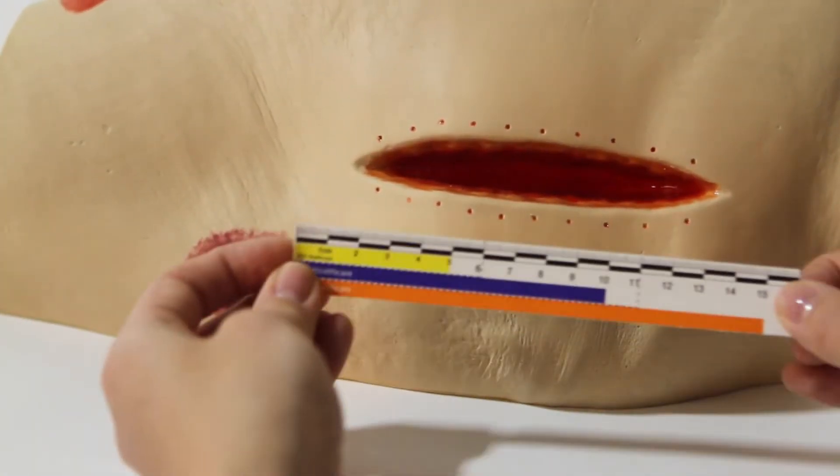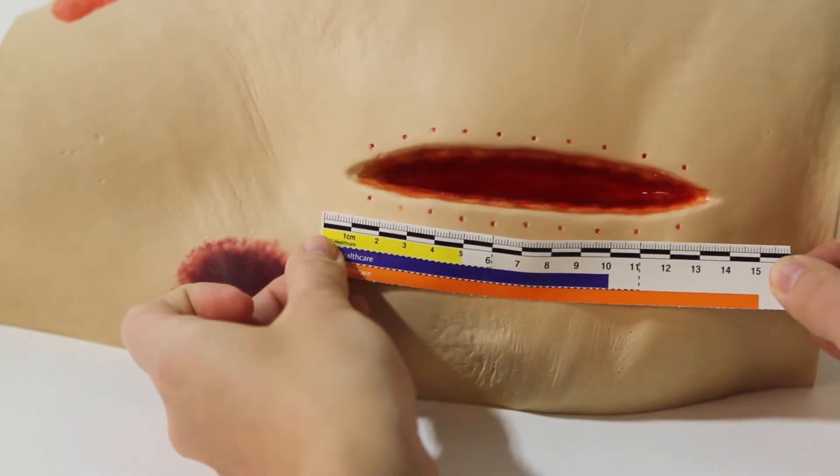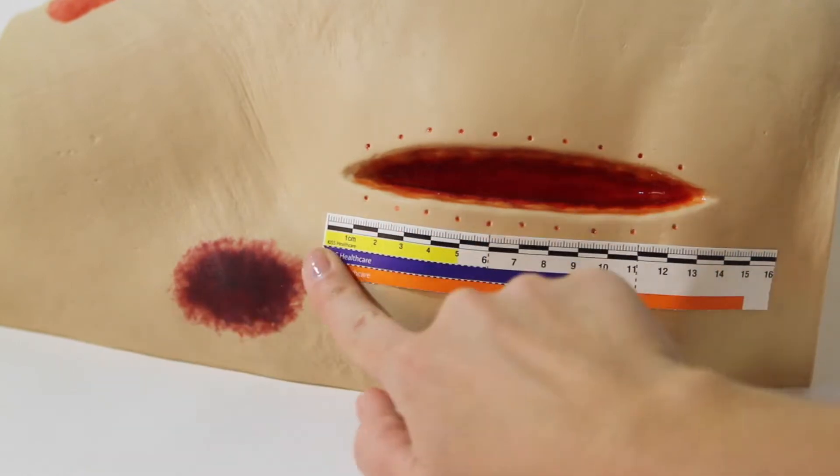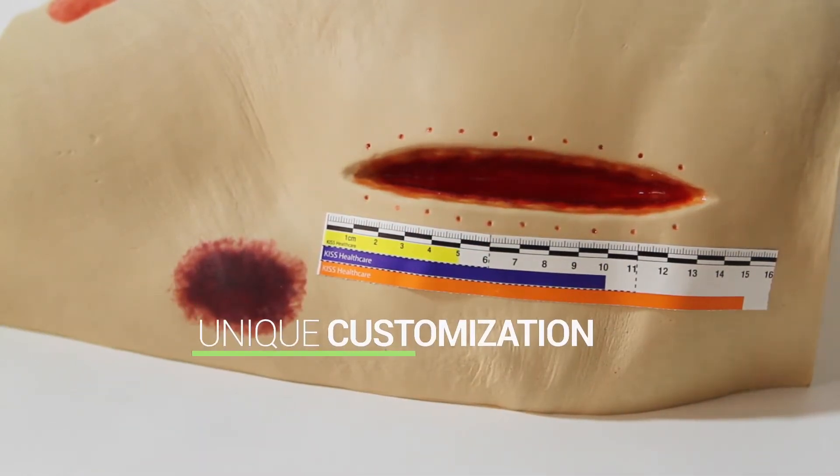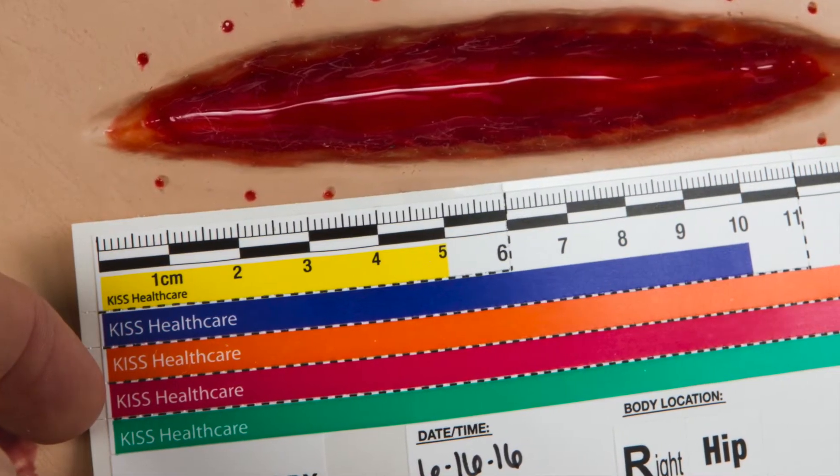The KISS system wound ruler is great for linear and larger wounds. The custom color-coded ruler is perforated and easy to use. The multiple perforated edges allow for unique customization to best fit the size of the wound. First, select a ruler size that is slightly larger than the wound.